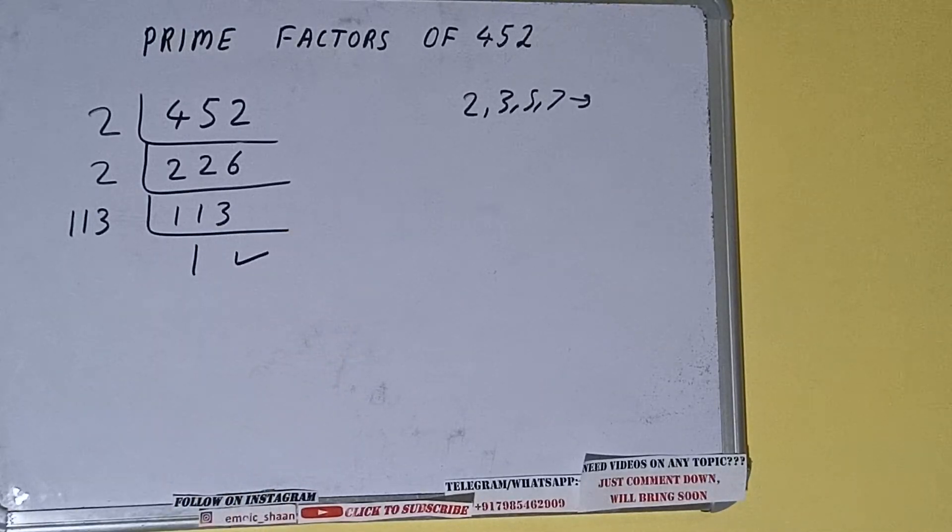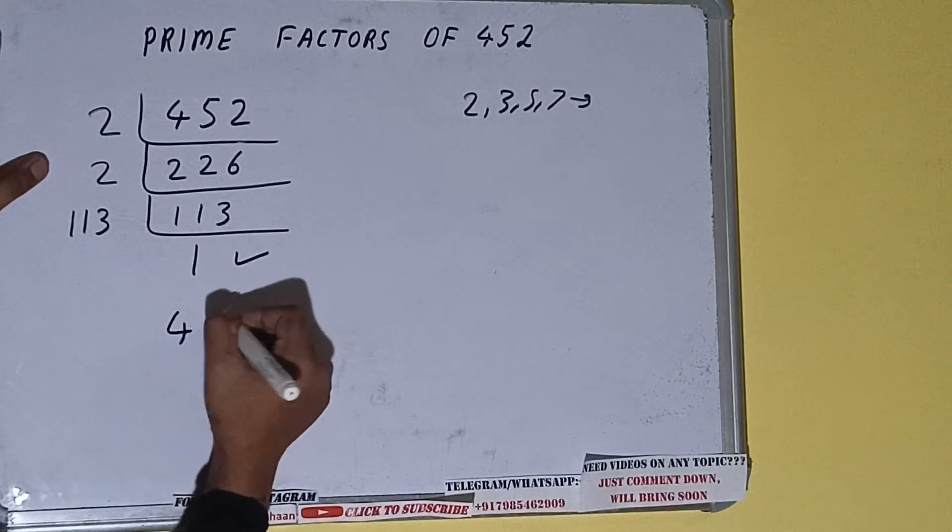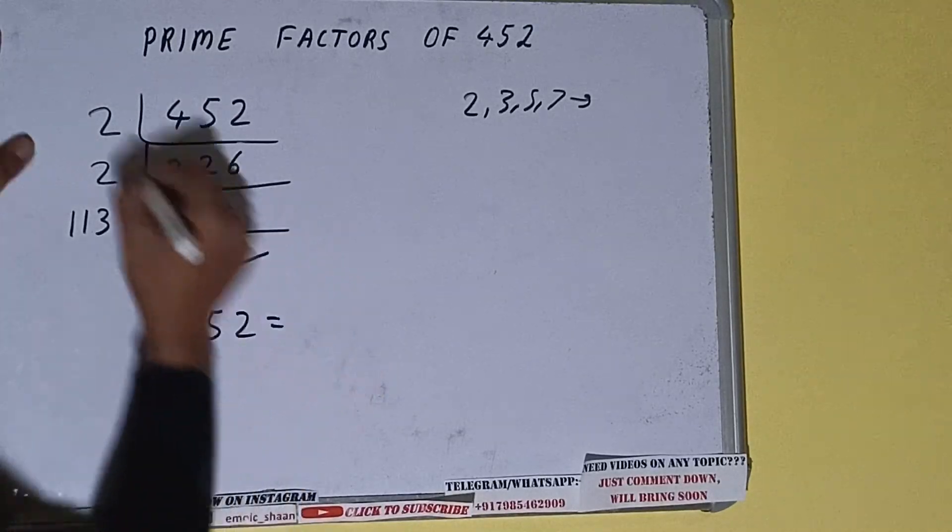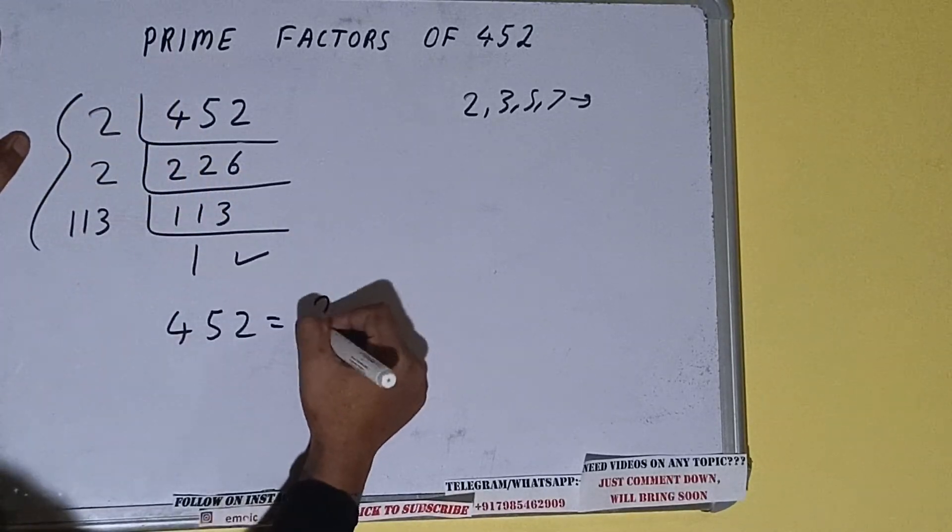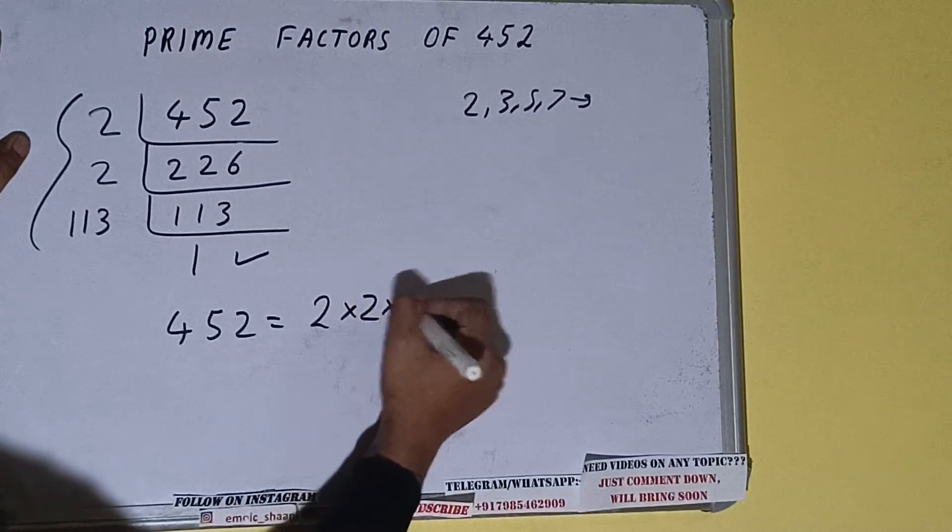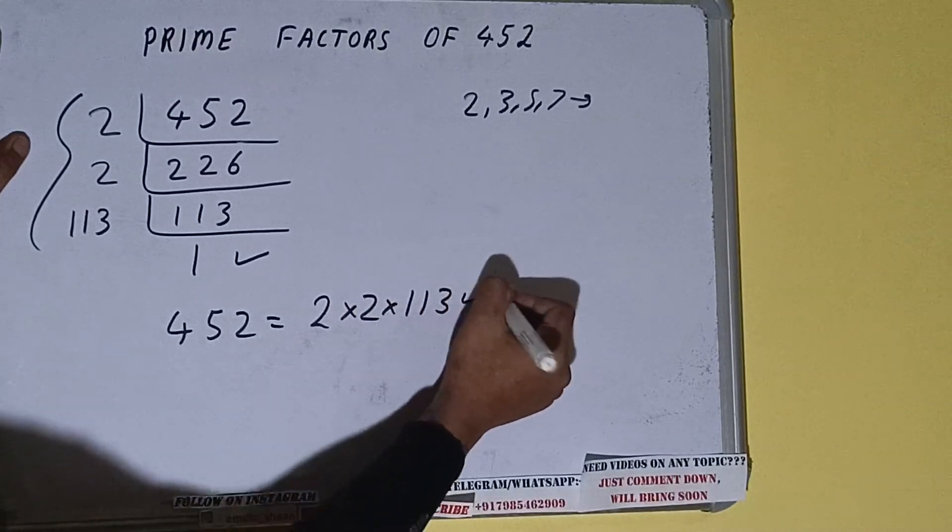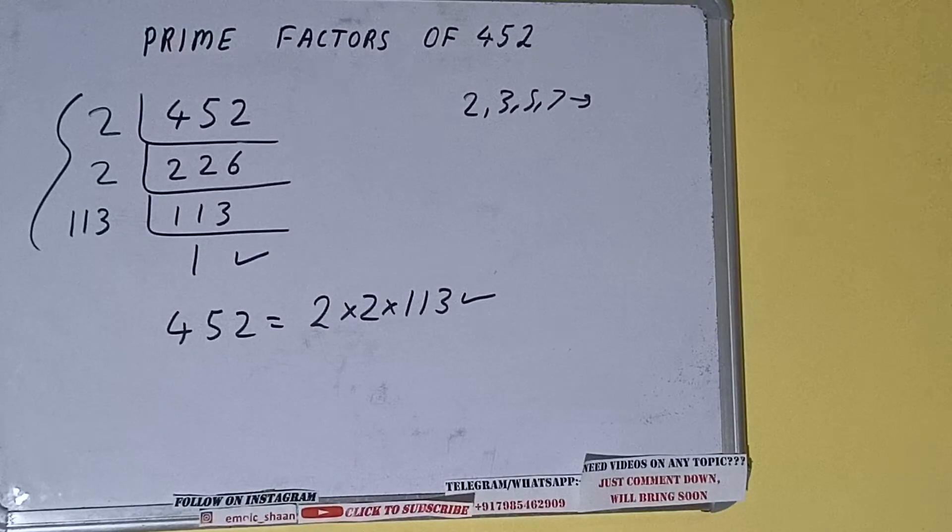And do one last thing, that is: prime factors of 452 will be whatever we have on the left-hand side. That is 2 × 2 × 113. That will be the answer. So this is all about prime factors of 452.